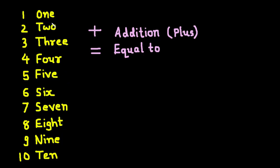1 - O-N-E. 2 - T-W-O. 3 - T-H-R-E-E. 4 - F-O-U-R. 5 - F-I-V-E. 6 - S-I-X. 7 - S-E-V-E-N. 8 - E-I-G-H-T. 9 - N-I-N-E. And finally, the least two-digit number which is 10 - T-E-N. We also learnt that 1 is the smallest single digit number and 9 is the greatest or the biggest single digit number.